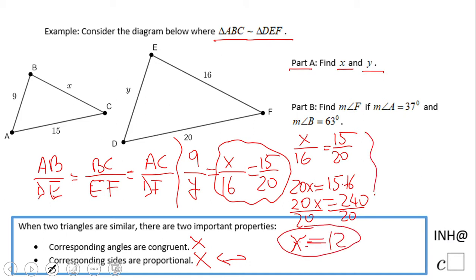We're going to do the same thing for y. For y, we're going to take 9/y = 15/20. Same cross multiplication: 9 times 20 is 180 equals 15y. Divided by 15, y equals 12.